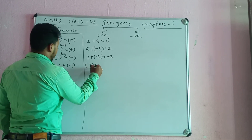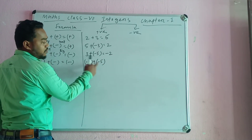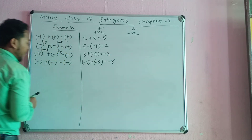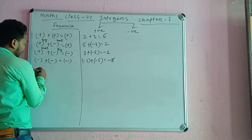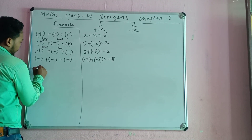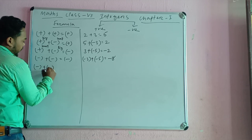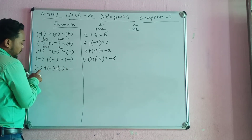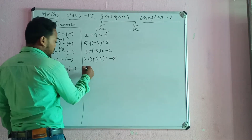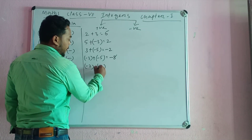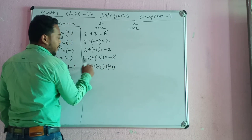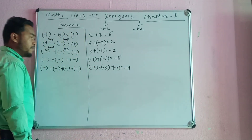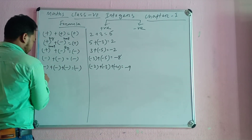Minus 3 plus minus 5. Minus 3 plus minus, plus minus. If this is minus minus minus minus, what will be minus minus minus? Minus is minus minus. It is minus minus minus minus. Now I am going to show you some questions.